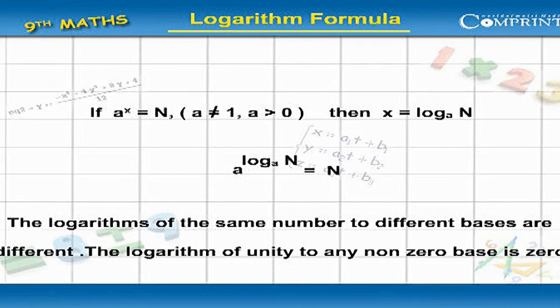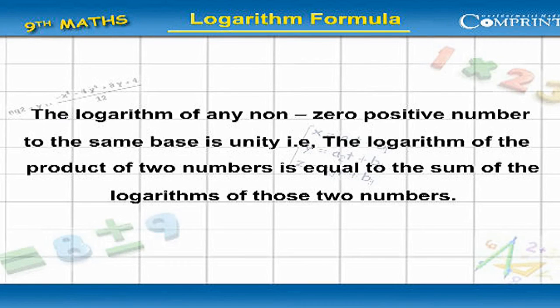The logarithms of the same number to different bases are different. The logarithm of unity to any non-zero base is 0. The logarithm of any non-zero positive number to the same base is unity.